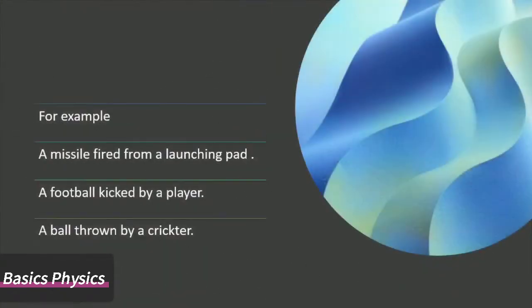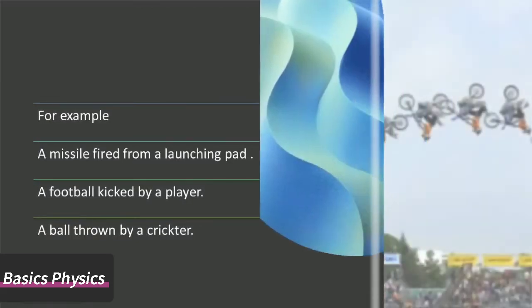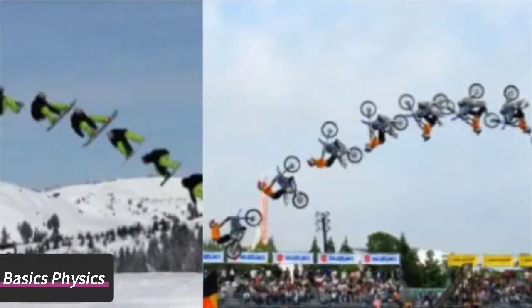For example, a missile fired from a launching pad, a football kicked by a player, a ball thrown by a cricketer, motion of a rider performing a bike stunt, motion of a snowboarder descending from a slope are also examples of projectile motion.